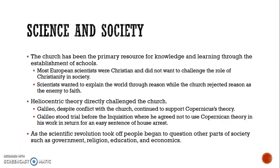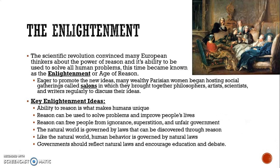As the scientific revolution took off, people began to question other parts of society such as government, religion, education, and economics, which leads us to the Age of Enlightenment. The scientific revolution had convinced many European thinkers of the power of reason and its ability to solve all human problems. This became known as the Enlightenment — also called the Age of Reason — because they focused mainly on the power of reason or logic, the ability of humans to think through problems and come up with solutions on their own.